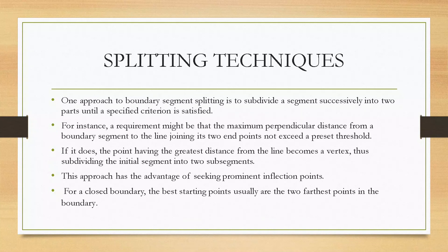There are other approximation techniques such as splitting techniques and merging techniques. The splitting technique is the approach to subdivide a segment successfully into two parts until a specified criterion is satisfied. For instance, a requirement might be that the maximum perpendicular distance from a boundary segment to the line joining its two endpoints does not exceed a preset threshold. If it does, the point having the greatest distance from the line becomes a vertex, subdividing the initial segment into two subsegments. This approach has the advantage of seeking prominent inflection points. For a closed boundary, the best starting points are usually the two farthest points on the boundary.